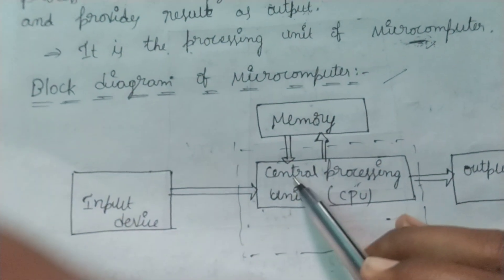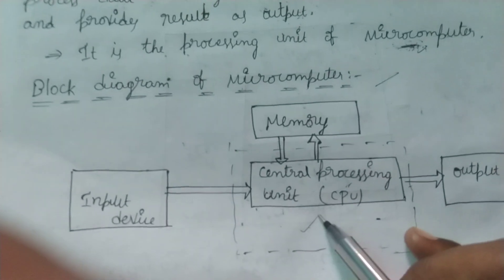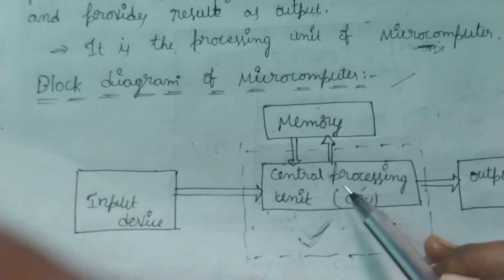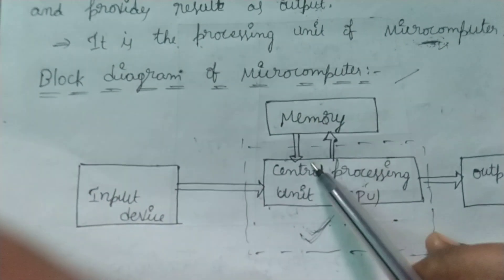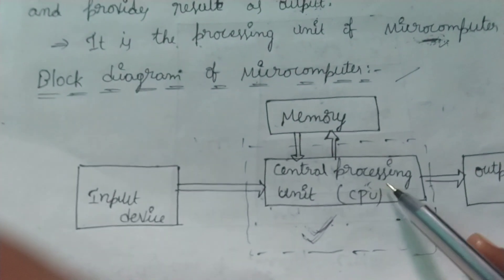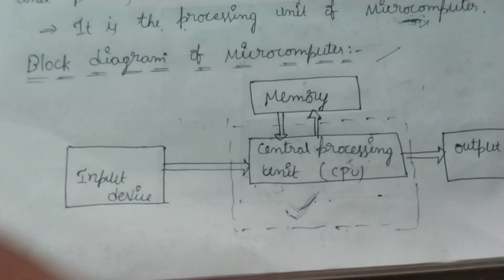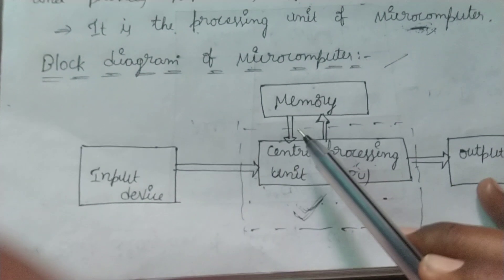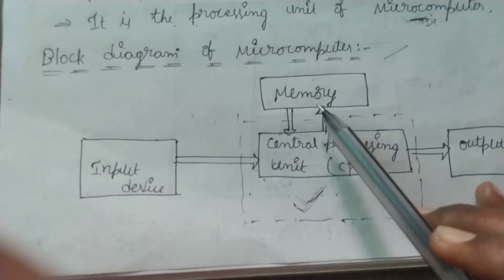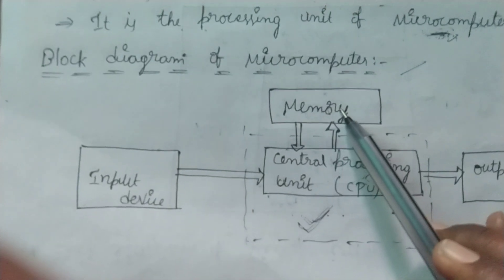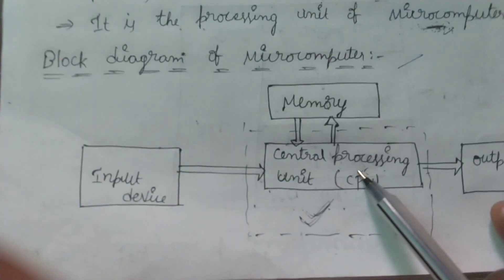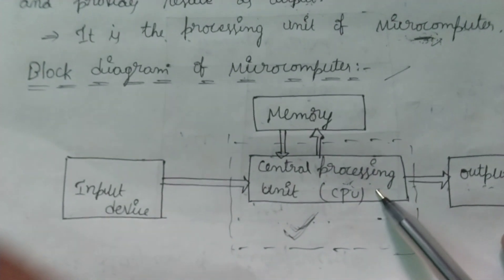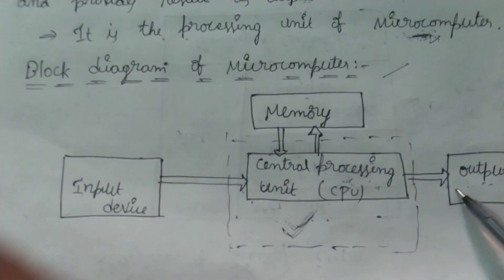In this block diagram of microcomputer, the main part is the central processing unit. This central processing unit is nothing but a microprocessor. It is connected to memory externally, along with input devices and output devices. Input devices are used to give instructions and data to the microprocessor, and memory is used to store external data and process it. After completion of operations, the output is produced by the output devices.